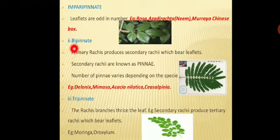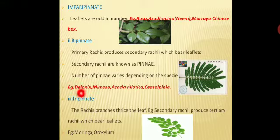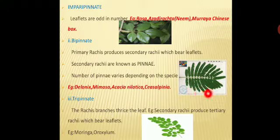Next is bipinnate. 'Bi' refers to two — the primary rachis produces secondary rachises, which bear leaflets. The secondary rachises are known as pinna. The number of pinna varies depending on the species. Examples include Delonix, Mimosa, Acacia nilotica, and Caesalpinia. In bipinnate, the leaflets at the tip end in an even number — 'bi' refers to two, and 'pinna' refers to leaflets.